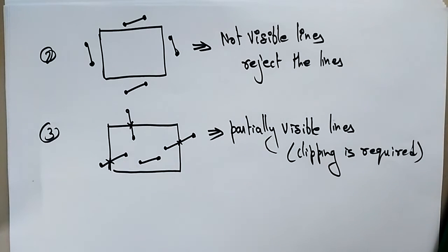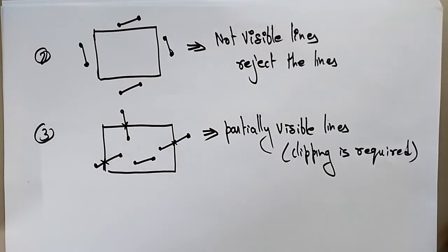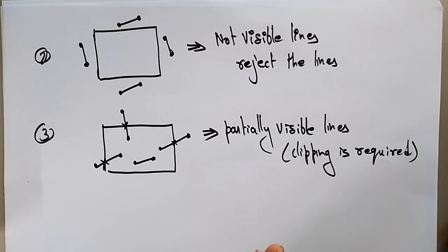For each line you need to find the intersection point, and based on that intersection point you clip the line. In the next video I'll explain the different types of line clipping algorithms, including the Cohen-Sutherland line clipping algorithm. Thank you.